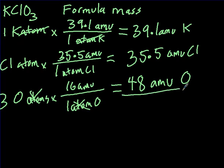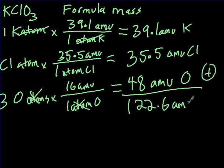You add all these three up. 124. 122. 16. 15. 16. Yeah, 122.6. Yeah, that makes sense. I'm double checking. 122.6. This is the formula mass for KClO3.